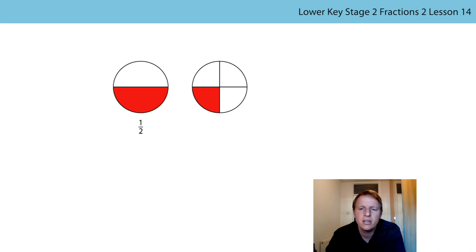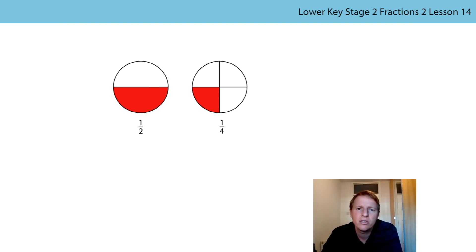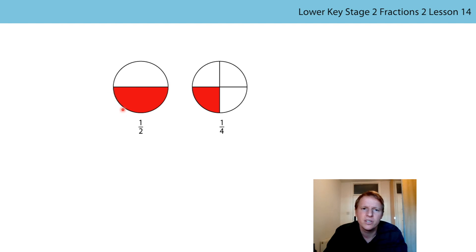What about our second circle? How many equal parts has this circle been split into? It's been split into four equal parts, so our denominator is four. And how many of those equal parts have been shaded? One of them. So our fraction is one quarter. Now, just looking at those pictures, which fraction is larger — a half or a quarter? Looking at the amount of the shape that has been shaded, which one's larger? It's a half, isn't it?